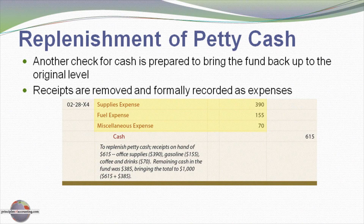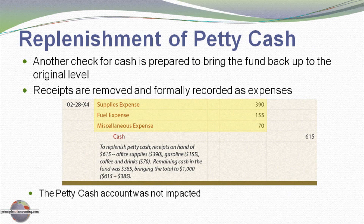That brings the petty cash fund back up to $1,000 and reflects that the $615 spent has now been appropriately recorded in the correct expense accounts. Notice that the petty cash account itself is not impacted — it still carries a $1,000 balance. The petty cash fund was initially debited for $1,000 and it's not changing. This is a credit to cash, not a credit to petty cash.